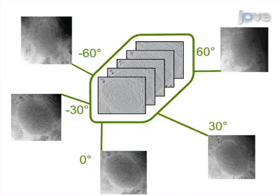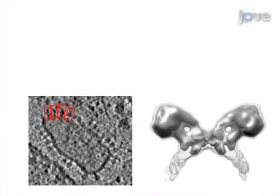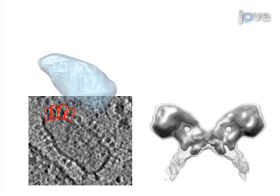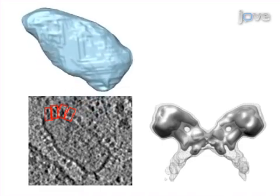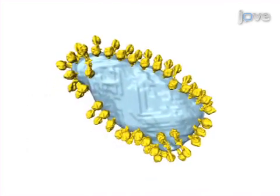Then the tilt series is processed to generate a tomographic volume. Finally, the protein densities are averaged to determine the structure of the proteins, and the membranes are segmented to reveal their 3D structure. By repositioning the averages of proteins back into the tomograms, the structure and organization of proteins in the membrane is revealed.